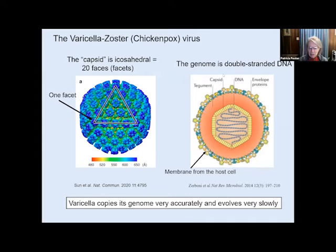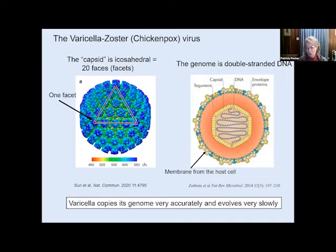Around the capsid is a coat called the tegument, which contains a lot of the proteins the virus will use to infect cells. On the outside of that is a membrane derived from the host cell, with proteins sticking out. Because it's double-stranded DNA and a very complex virus, it copies its genome very, very accurately. The mutation rate is probably about 200-fold lower than it is for coronavirus, which means this virus evolves very, very slowly.